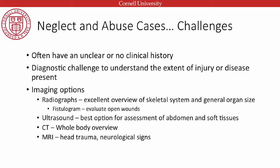We often have an unclear or absent clinical history, making it diagnostically challenging to understand the extent of injury or disease. We have several imaging options. Radiographs provide a good standard overview — x-ray machines are in most practices and give a nice overview of the skeletal system and general organ size. We can assess for blood in the abdomen, fractures, and can evaluate open wounds. We can perform fistulograms and assess fractures, skeletal opacity, and general overview of thorax and abdomen.